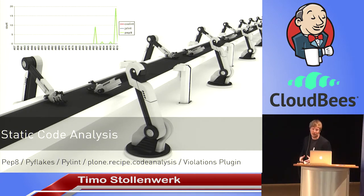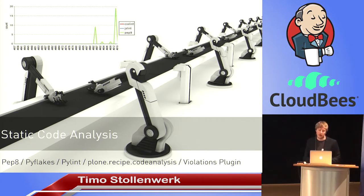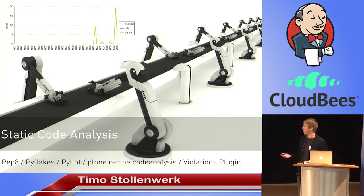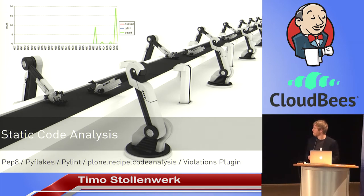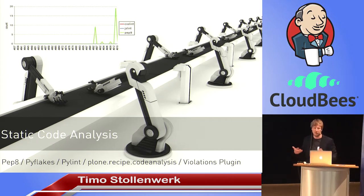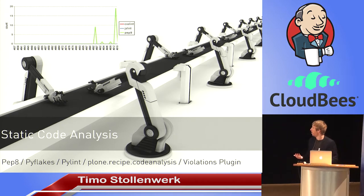Another important thing for dynamically typed languages like Python is static code analysis — arguably even more important than for Java. Python developers will know tools like PEP8, PyFlakes, and PyLint. We created an integration for those tools, plus things like JSHint, called 'plone.recipe.codeanalysis,' which is a Buildout recipe. The violations plugin of Jenkins can process and display all those statistics, so the integration is quite nice.